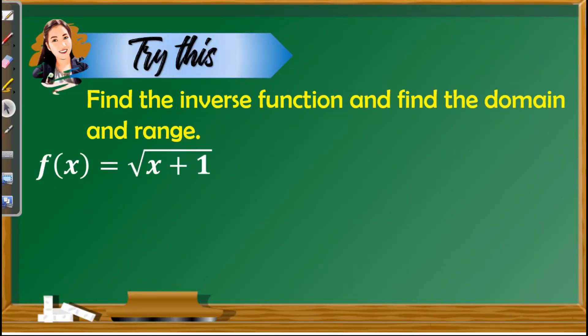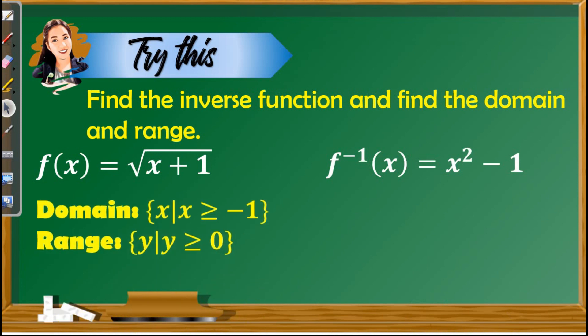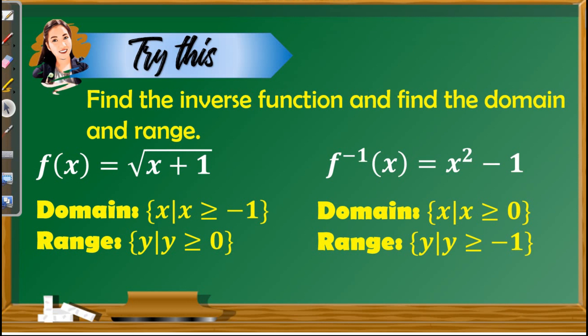After giving examples on finding the domain and range of one-to-one functions and their inverses, it is now time to test your understanding. You may pause the video to answer. Let's check: for f(x) = √(x + 1), the inverse is f⁻¹(x) = x² − 1. The domain is x ≥ −1 and the range is y ≥ 0. For the inverse, interchange domain and range: domain is x ≥ 0, taken from the range of the function, and range is y ≥ −1, taken from the domain of the function.